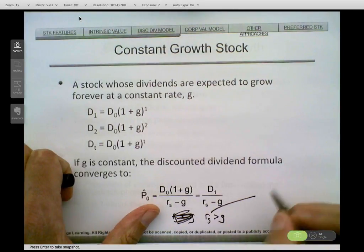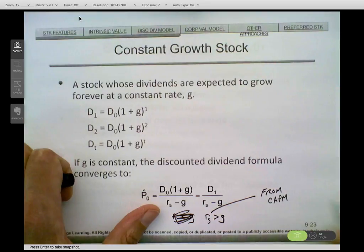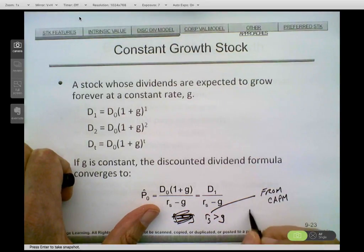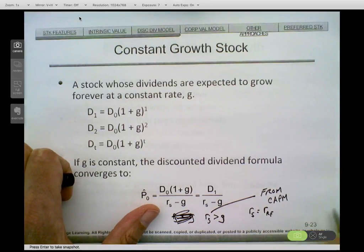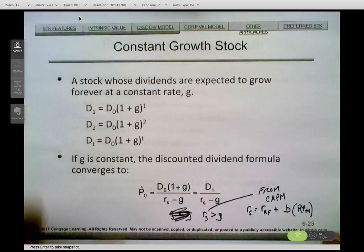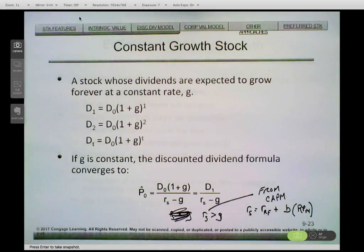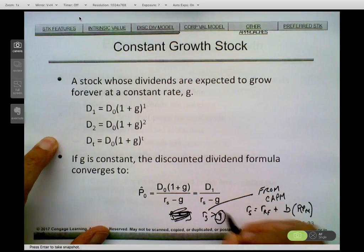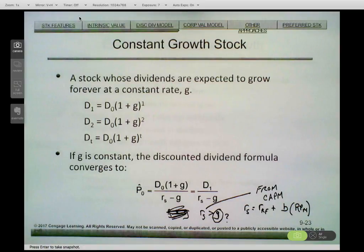We can get R_s from CAPM: R_s equals the risk-free rate plus beta times the risk premium on the market. I've given you a risk-free rate of 2.4% and a market risk premium of 5% — all you have to do is find the beta. The more challenging piece is G — where does that growth rate come from? That's what we'll talk about next: estimating the dividend growth rate.